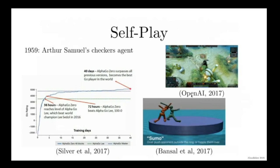Today, we see this in things like AlphaGo, including AlphaGo Zero, and various projects from OpenAI, such as sumo-playing agents that learn via self-play, and the Dota defense agents that learn from self-play. You can think of this as an adversarial game, pitting each agent against a copy of itself, and we see that learning in these games greatly enhances their capabilities.